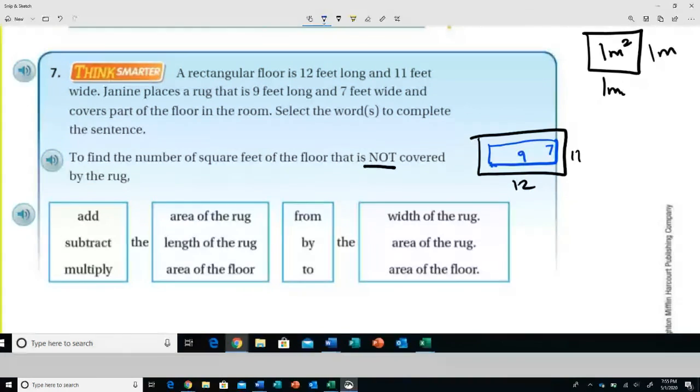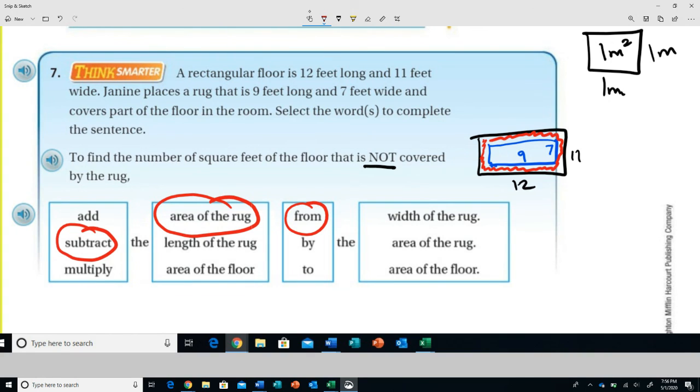Imagine that the black rectangle is the floor and the blue rectangle is the rug. I need to know the part of the room that is not covered by the rug, which would be this little squiggly that I'm drawing between it. I'm going to need to find the area of the room and I need to subtract the area of the rug, and then I will know what is left over. So I am going to need to subtract the area of the rug from the area of the floor. Just got to think about it a little bit. Take a look at what they're giving you.